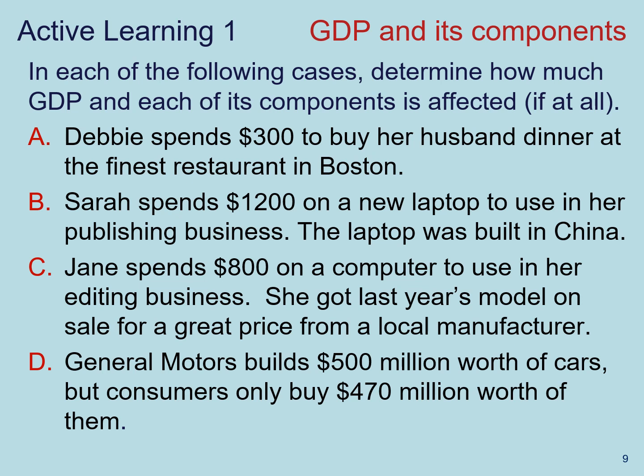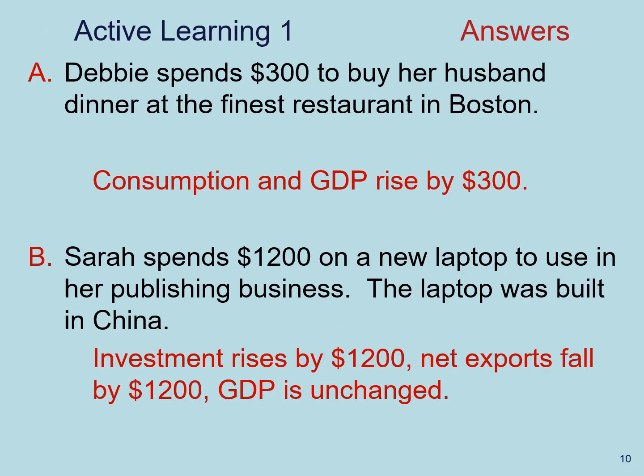Now let's put into practice what we've learned. In this active learning exercise, think about what would happen to GDP and each of its components in the following cases. For example A: Debbie spends $300 to buy her husband dinner at the finest restaurant in Boston. Consumption increases by $300, and because consumption is part of the GDP equation, GDP will also rise by $300.